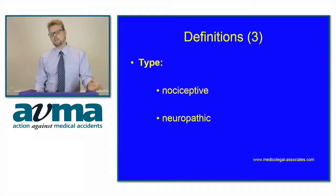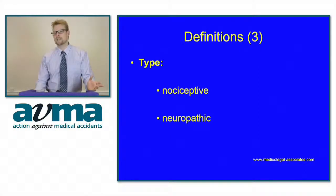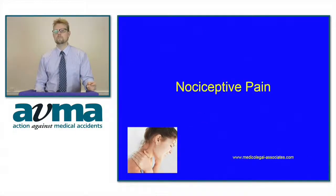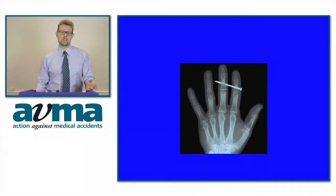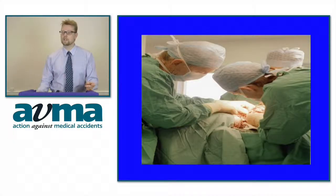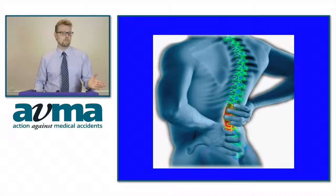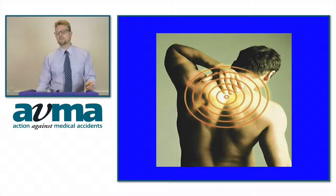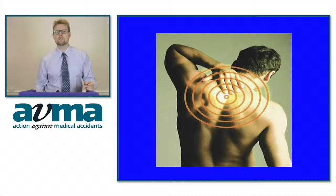There's another type of pain — neuropathic pain, or nerve pain — where there's actual damage and dysfunction to the signalling processes, and we'll come across that in more detail later. So let's have a look at some nociceptive pain. These images show examples: that's going to hurt, that's really going to hurt, that's going to hurt afterwards, and this is a much more chronic type of pain. These are a mixture of acute and chronic musculoskeletal type pains.